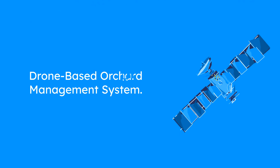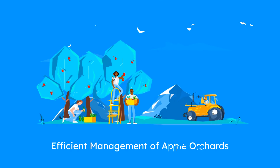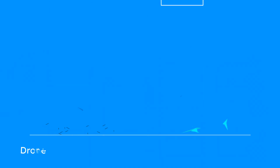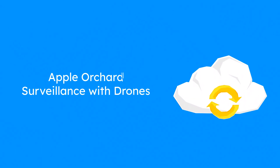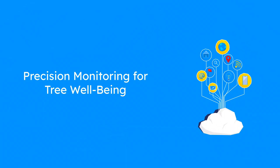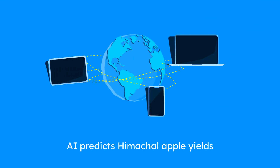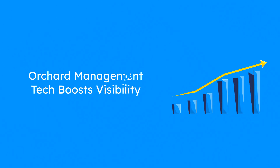SIH 1611: Drone-based intelligence system for apple orchard management. Managing apple orchards efficiently is essential for productivity and profitability, and this project leverages drone technology to revolutionize orchard management. Picture drones equipped with multi-spectral and thermal cameras flying over apple orchards to monitor tree health, manage nutrients, and detect pests with precision. AI models will predict yields, and innovative marketing tools like virtual tours will showcase premium apples to a global audience. It's a tech-savvy approach to optimizing orchard management and boosting market visibility.